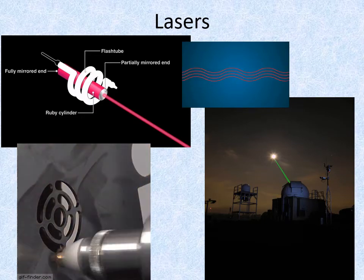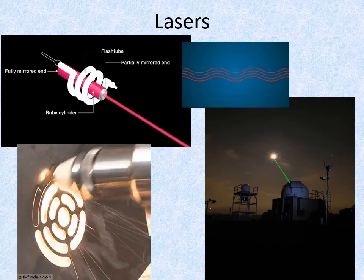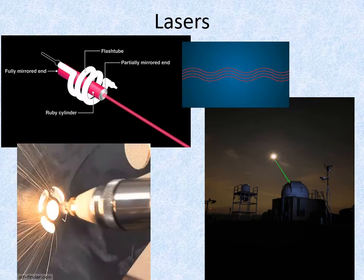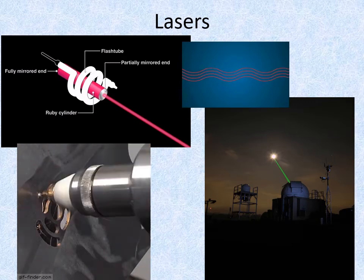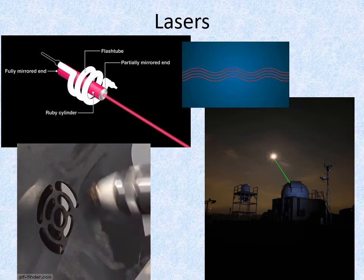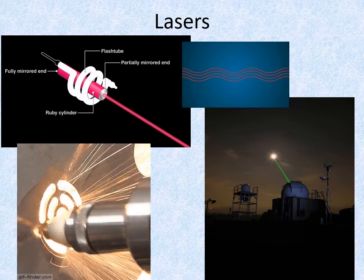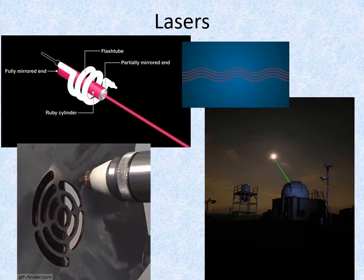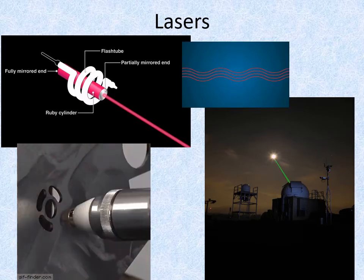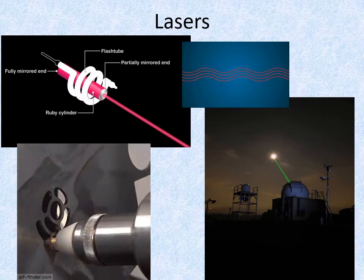Most lasers use a pumped up form of fluorescence inside a special material, such as a ruby crystal, to create a narrow and very intense beam of light. This light has two important properties. It is monochromatic, meaning it consists of just one wavelength, and it is coherent, meaning all the waves are in step.